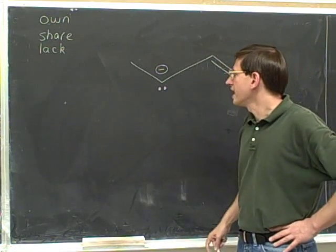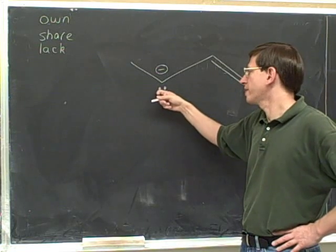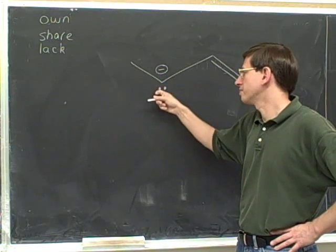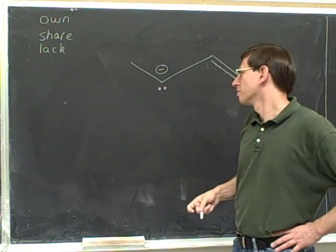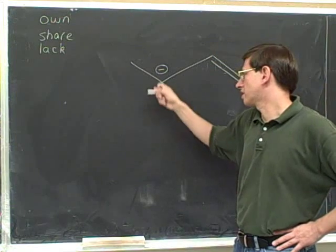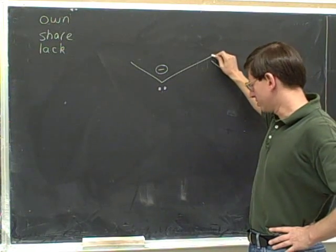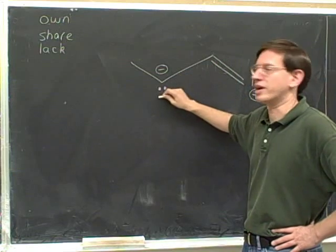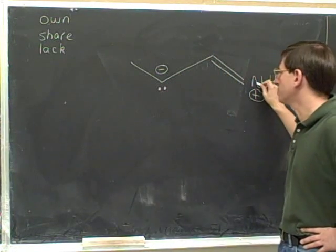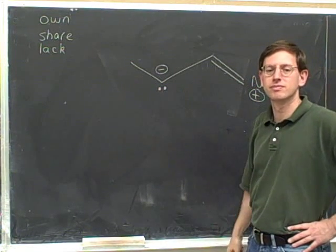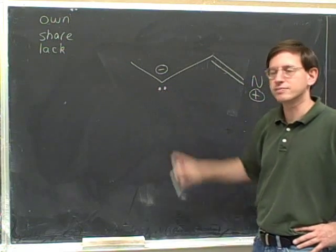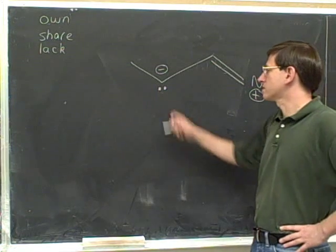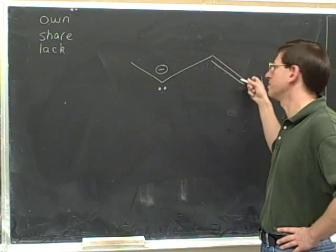Here's another picture. Focusing on this lone pair drawn on the carbon: this carbon owns the lone pair. The other carbon completely lacks it, and the nitrogen also completely lacks this particular lone pair — it has other electrons, but it lacks this pair. So this lone pair is owned by one carbon and lacked by the other carbon and the nitrogen.